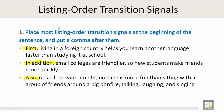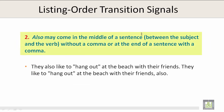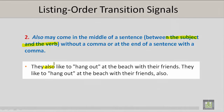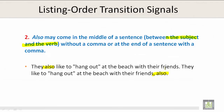Please note that most listing order transition signals start at the beginning of the sentence and a comma is placed after them. Number two: 'also' may come in the middle of a sentence, between the subject and the verb, without a comma, or at the end of a sentence with a comma. For example: 'They also like to hang out at the beach with their friends.' Or: 'They like to hang out at the beach with their friends, also.'